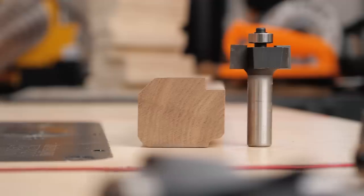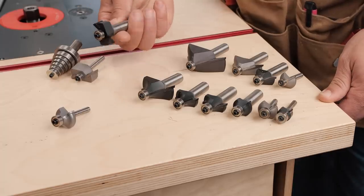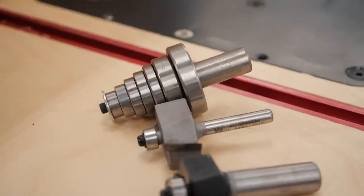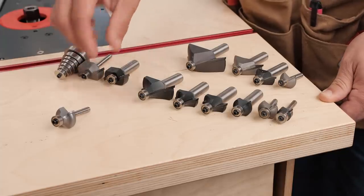And then rabbeting bits are another one I use. This is a three-eighths inch rabbet, and then this is a cool set that Bits and Bits sells that allows you to put different bearings on there so you can change the size of the rabbet.